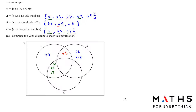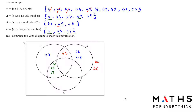Numbers not in any set go outside the circles. Writing down from 41 to 50: 44 is not in any set — write it outside. 46 is not in any set — write it outside. 47 is in A and C. 48 is in set B. 49 is in A. 50 is also not in any set — write it outside.